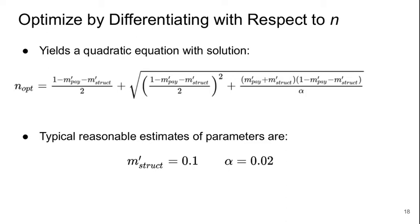So how do we find how the optimized behavior would occur? We do this by differentiating to find the minimum or maximum. We optimize by differentiating with respect to N. This gives a quadratic equation, and the solution of the quadratic equation is what's shown here: the optimum value of N is a function of M'payload, M'structure, and alpha.